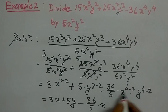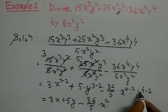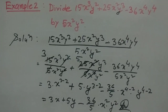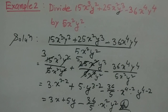x to the power 4 minus 2 is x squared, and y to the power 4 minus 2 is y squared. And this is the answer. Hope you have understood. In the next video we shall discuss some more problems regarding division.